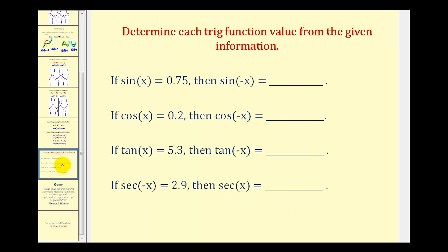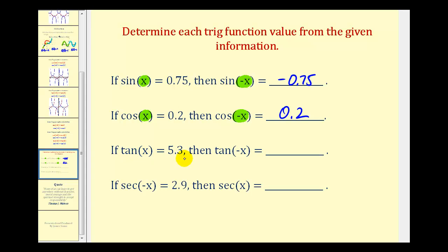Let's take a look at some examples. If sine x is equal to 0.75, then sine of negative x is going to be equal to negative 0.75, because the sine function is an odd function — if we change the sign of the x-coordinate, the function values will be the opposite sign. But the cosine function is an even function, so if cosine x equals 0.2, then cosine of negative x is also equal to 0.2. The tangent function is an odd function, so if tangent x equals 5.3, then tangent of negative x is equal to negative 5.3. The secant function is an even function — if secant of negative x is equal to 2.9, then secant x is equal to 2.9 as well.